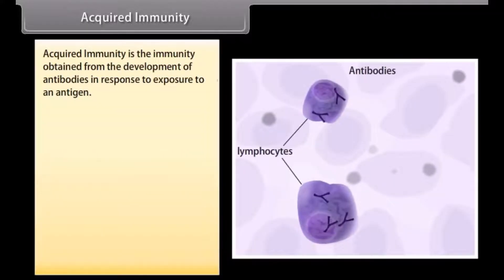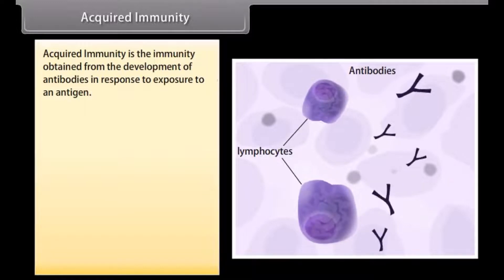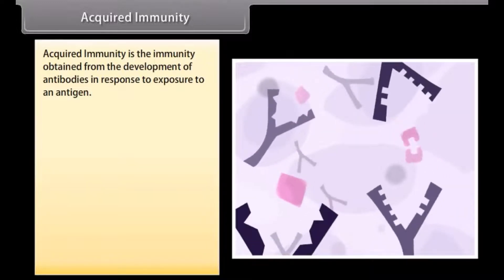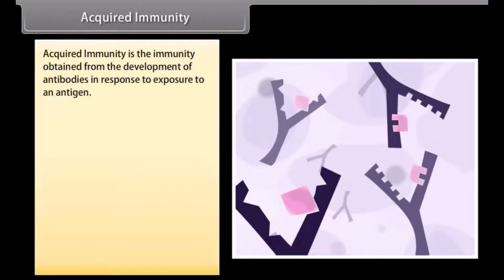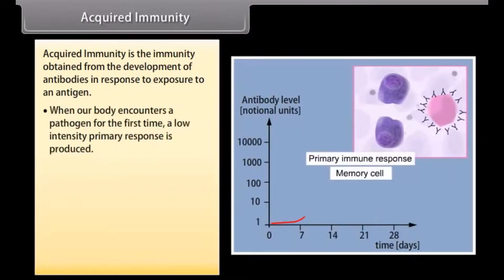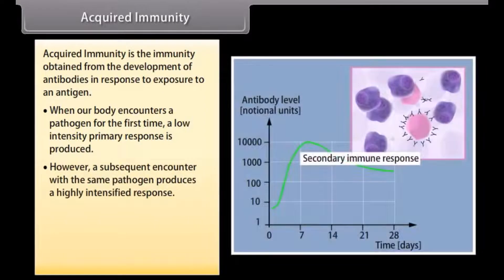Acquired immunity is the immunity obtained from the development of antibodies in response to exposure to an antigen. When a body encounters a pathogen for the first time, a low-intensity primary response is produced. However, a subsequent encounter with the same pathogen produces a highly intensified response.